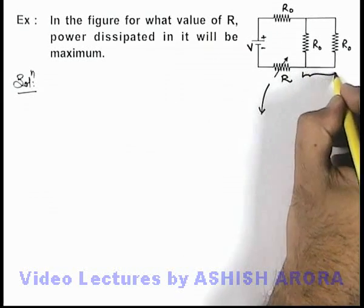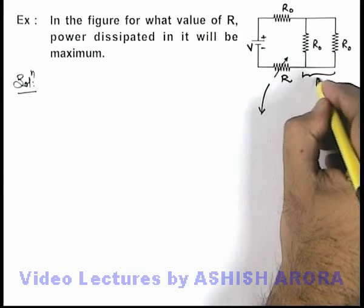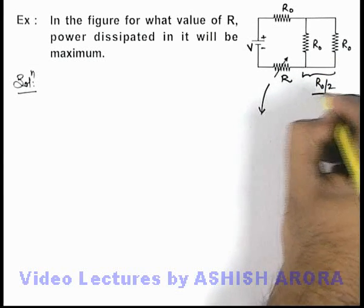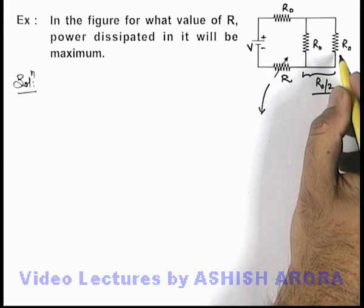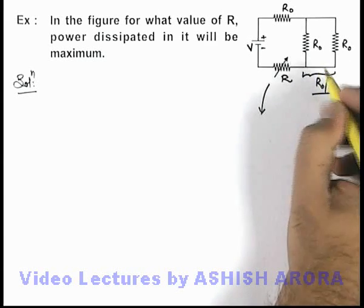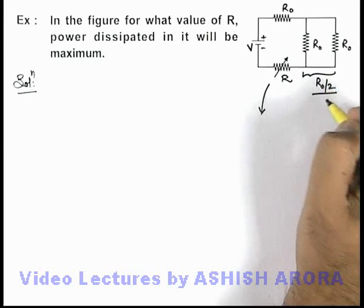Then obviously the group of these two in parallel can be written as an equivalent resistance R by 2, as we know when identical resistances are connected in parallel their equivalent becomes R by n. So here there are two resistances, it'll be R by 2.